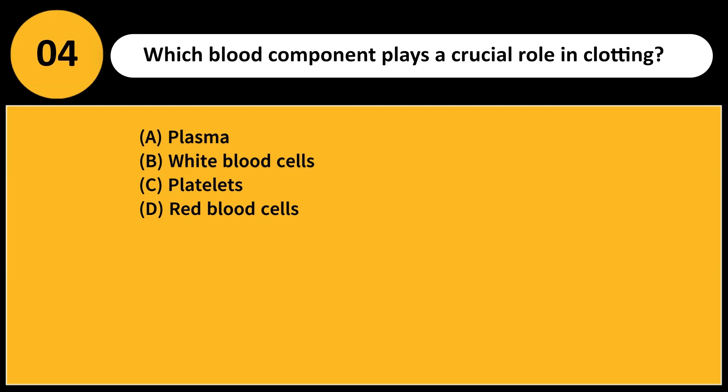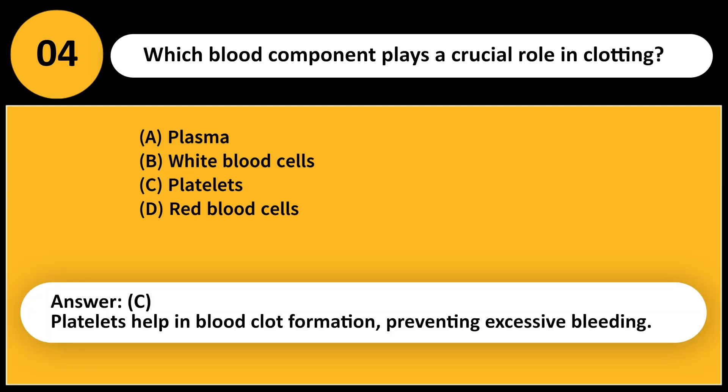Which blood component plays a crucial role in clotting? A. Plasma. B. White blood cells. C. Platelets. D. Red blood cells. Answer: C. Platelets help in blood clot formation, preventing excessive bleeding.